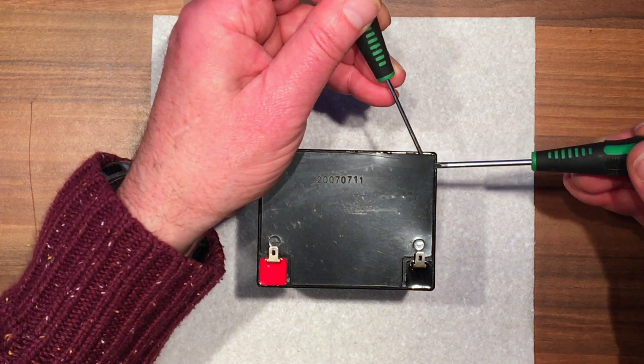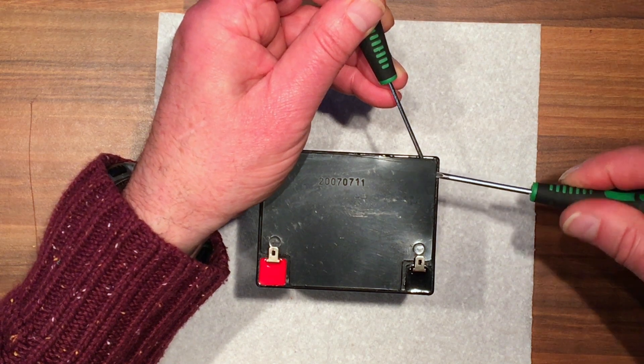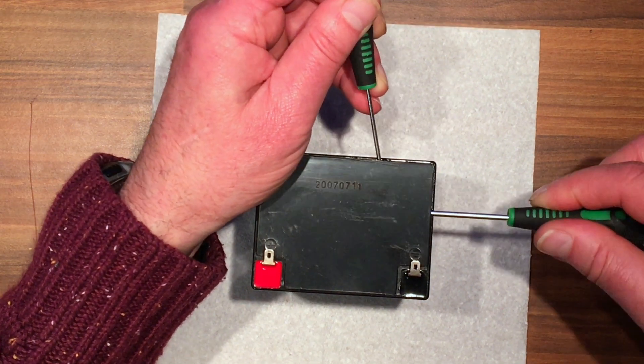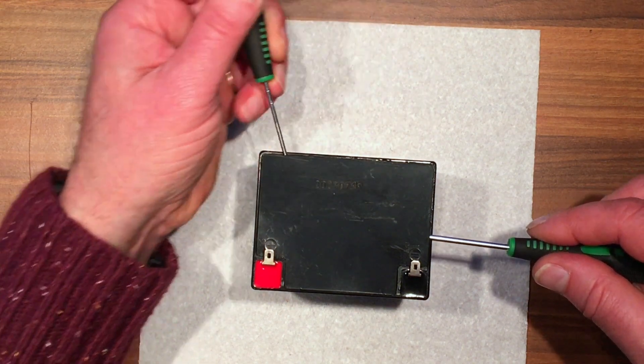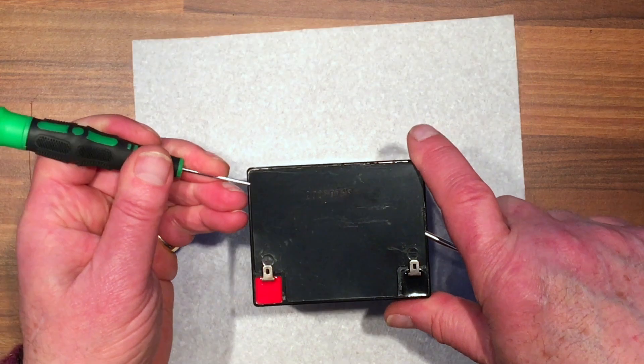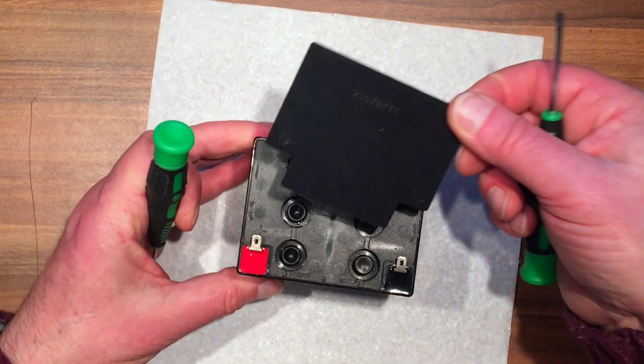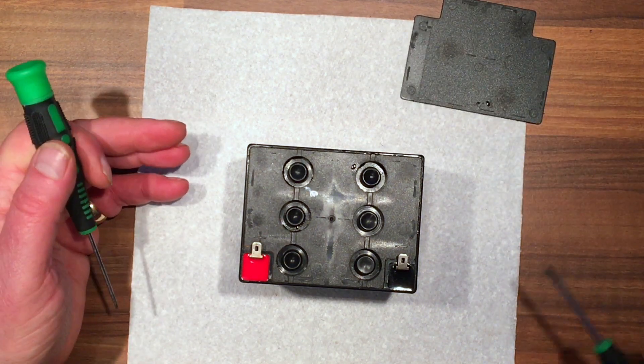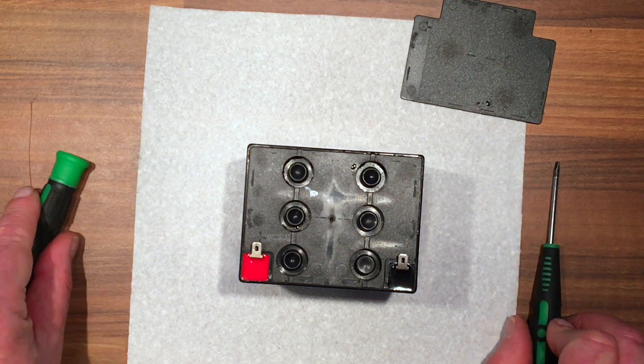There we have it. Then with another screwdriver, just gently move it along and see if you can break the seal. Work your way along and around. There we have the cover off. Now being a 12-volt battery, it has six cells.